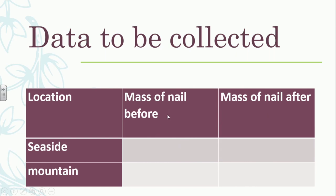Mass is more objective than appearance. If it's five grams, it's five grams — but appearance could look brown to one person and different to someone else, making it more subjective. So you record the mass of the nail before and after the experiment. Notice that there is no data in the table. Students often put data in without having done the experiment. You must not put data in the table — leave it blank. You're just showing how you would record the results, not recording results.